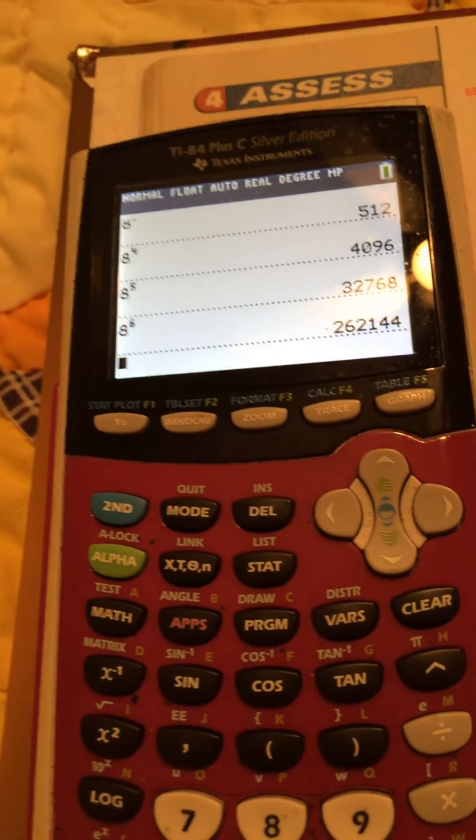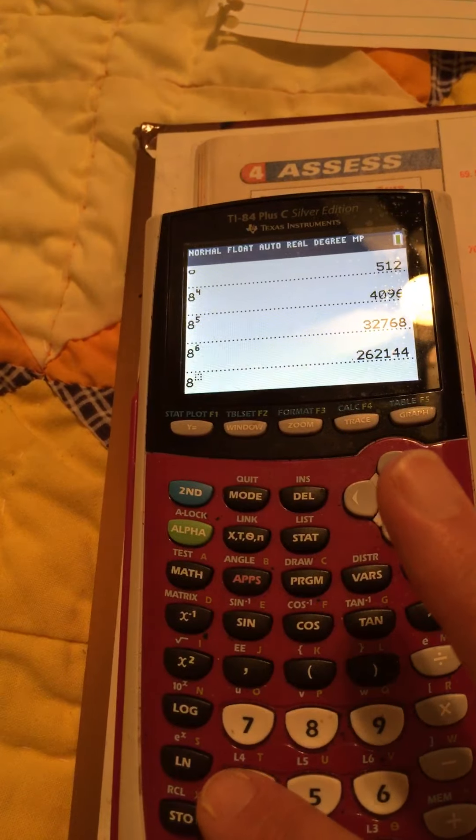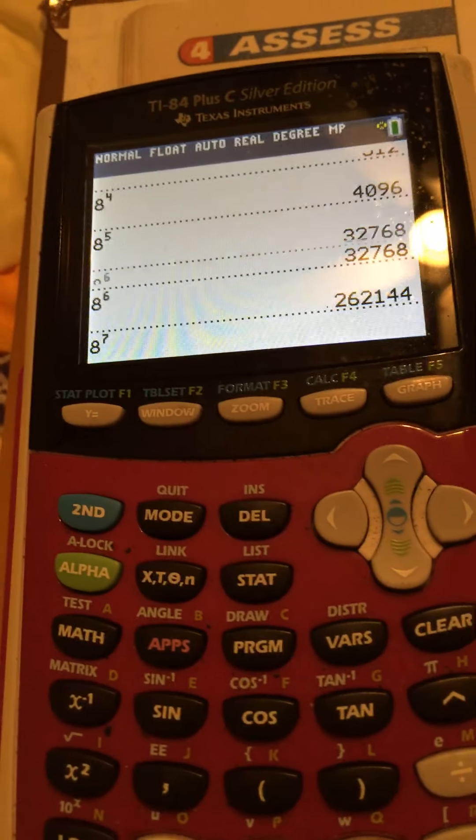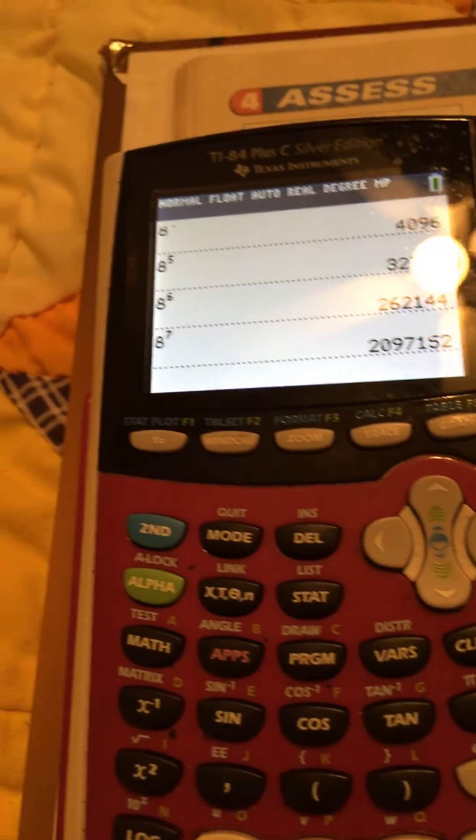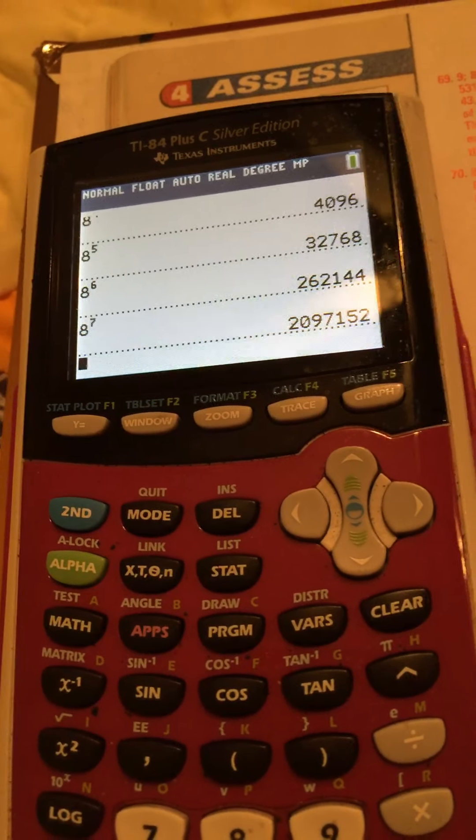Okay, now we're going to do eight to the seventh power. Push eight again. Up. Seven. There we go. Hit enter. Oh, what a big number. 2097152.